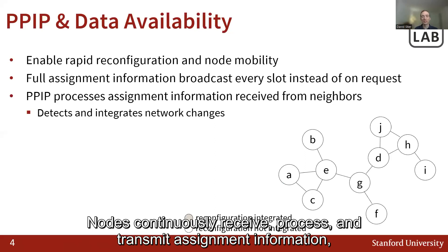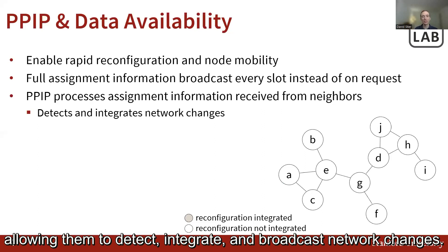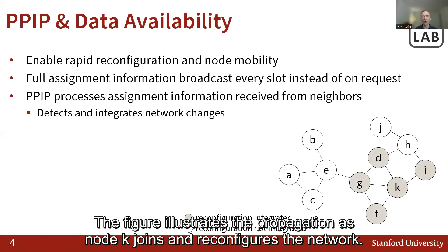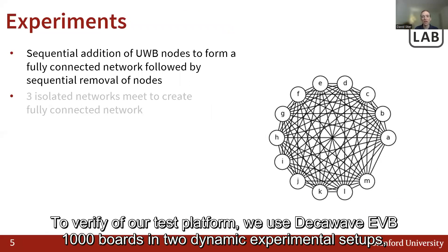Nodes continuously receive, process, and transmit assignment information, allowing them to detect, integrate, and broadcast network changes. The figure illustrates this propagation as node K joins and reconfigures the network.